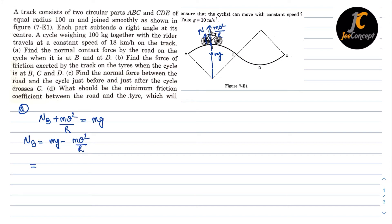Now M is given as 100 kg, G is 10, so this will become 1000 minus M is again 100 into V is given as 18 km per hour, that means 5 meter per second. So V is 5, so that means 25 upon R is 100 meter. So this will become 975 newton.